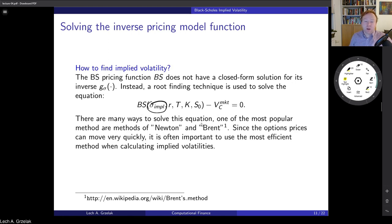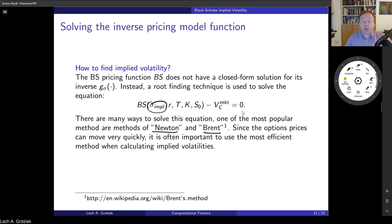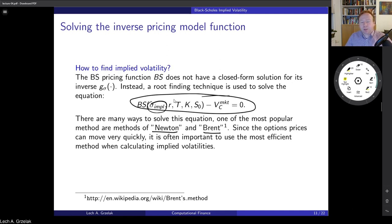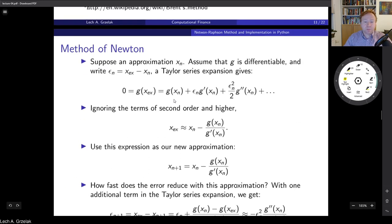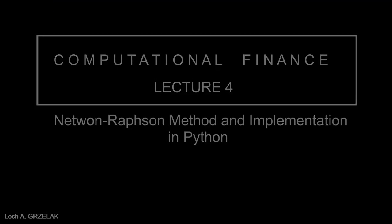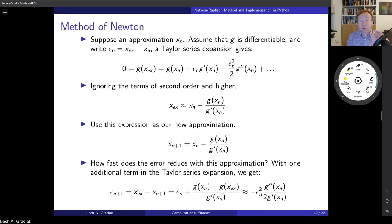This is an inverse problem — we search for the zero of function g. The most common numerical methods are Newton-Raphson and Brent's method. Market makers specializing in option trading pay close attention to very fast computation of implied volatility — it's about milliseconds, not seconds. The faster you compute implied volatility, the sooner you can identify potential arbitrage opportunities.